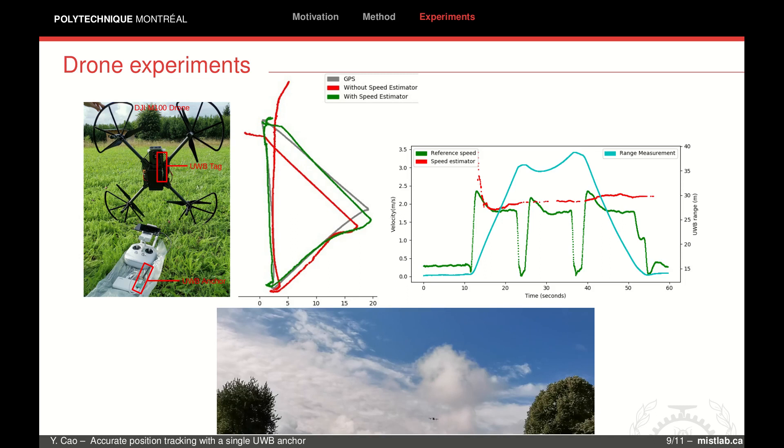The middle figure shows the absolute trajectory error between the estimated trajectory and GPS. We can see the green trajectory with the speed estimator is much closer than the red one without it. The red dots in the right figure are the speed estimation based on the cyan range measurements.